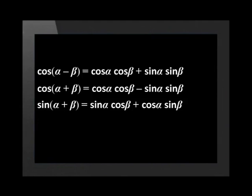Sin(α + β) is equal to sin α multiplied by cos β plus cos α multiplied by sin β. Sin(α - β) is equal to sin α multiplied by cos β minus cos α multiplied by sin β.